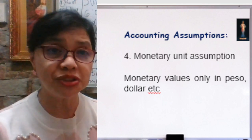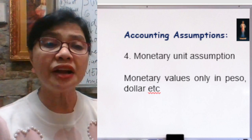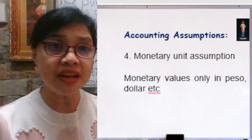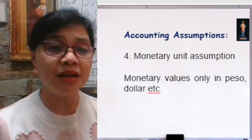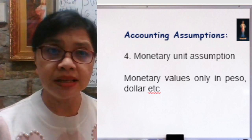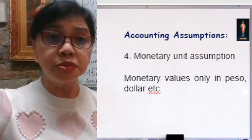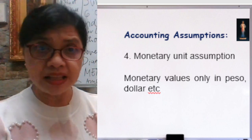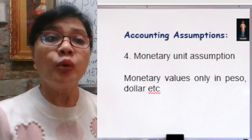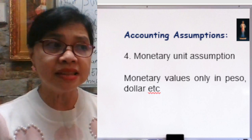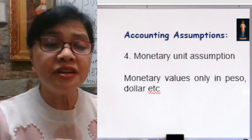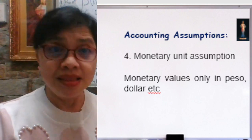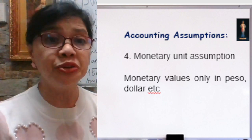Number four: the Monetary Unit Assumption. This assumption tells us that when we record financial transactions, they must be valued in pesos, dollars, or whatever denomination is used. For example, if I bought 100 boxes of notebooks in Divisoria for 1 million pesos, I should record 1 million pesos in my journal and ledger — not just the number of boxes. I should record the monetary value, using Philippine peso if you are in the Philippines.